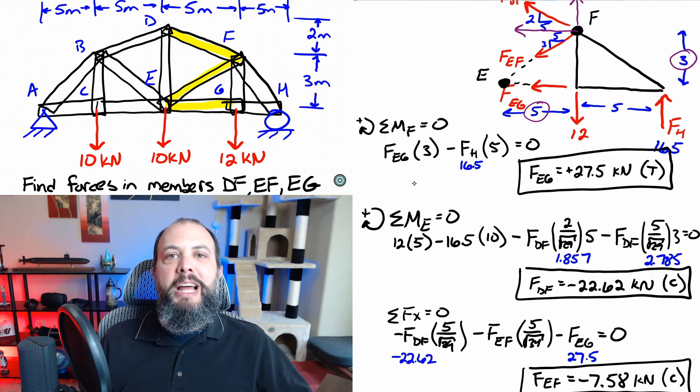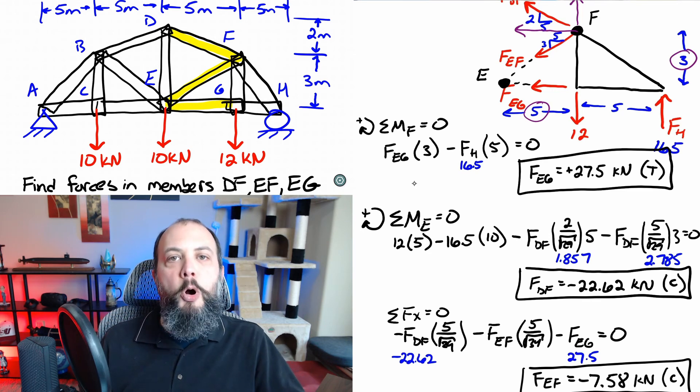So method of joints, method of sections, we got the same answers at the end of both techniques. Method of joints was a little bit easier because each free body diagram only had x and y direction equations, no moments. But method of sections was a little bit faster.